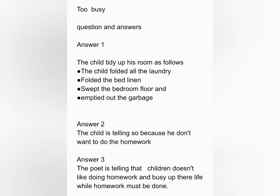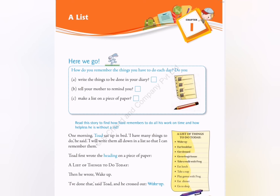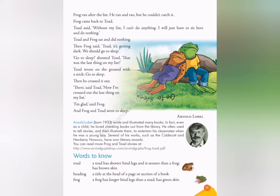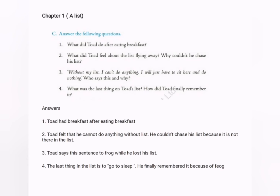Next, coming to the chapter 'A List' — this is all about a frog who prepares a list and does everything according to it. One day, while walking, he loses his list, feels very bad, and becomes helpless because he doesn't want to do anything that is not on the list. Here are the question and answers for the chapter 'A List.'